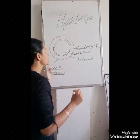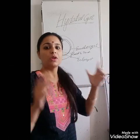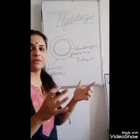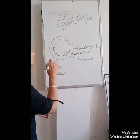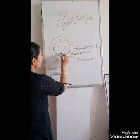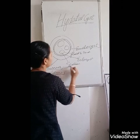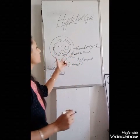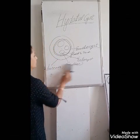In exams this comes as a long question. You have to draw the diagram of the hydatid cyst with all the brood capsules and scolices inside it, with the stalk, and you have to describe how the daughter cyst is formed and how the granddaughter cyst is formed.